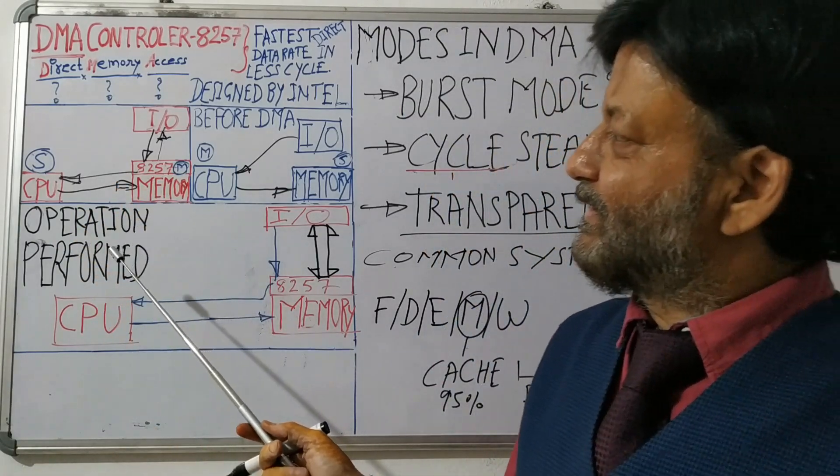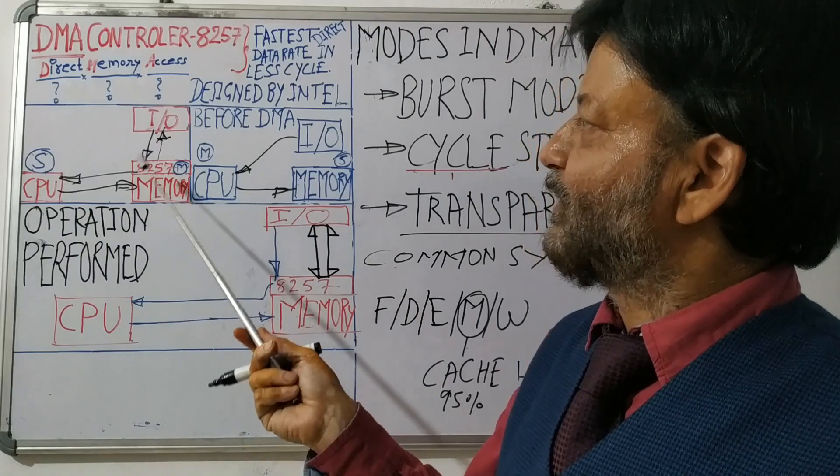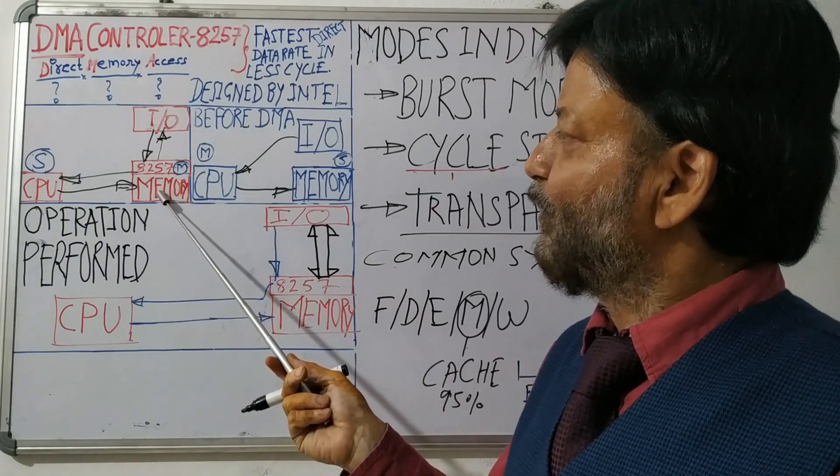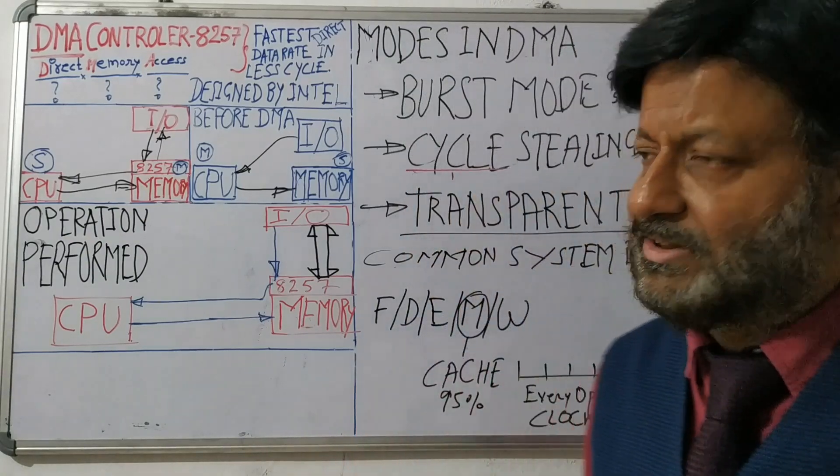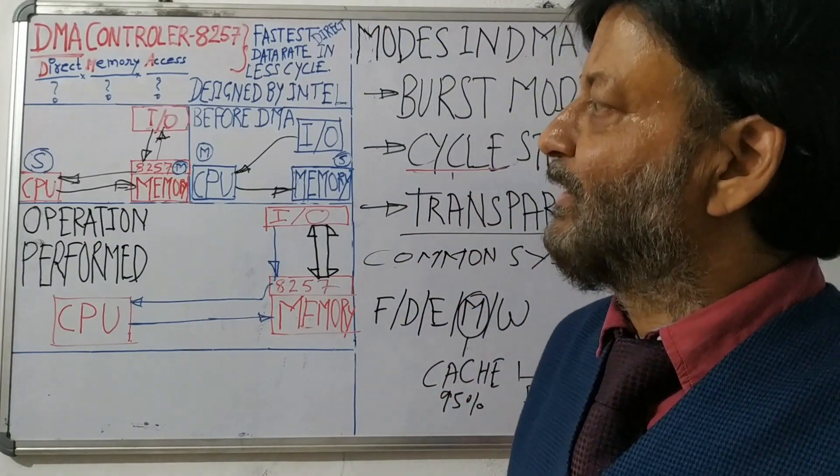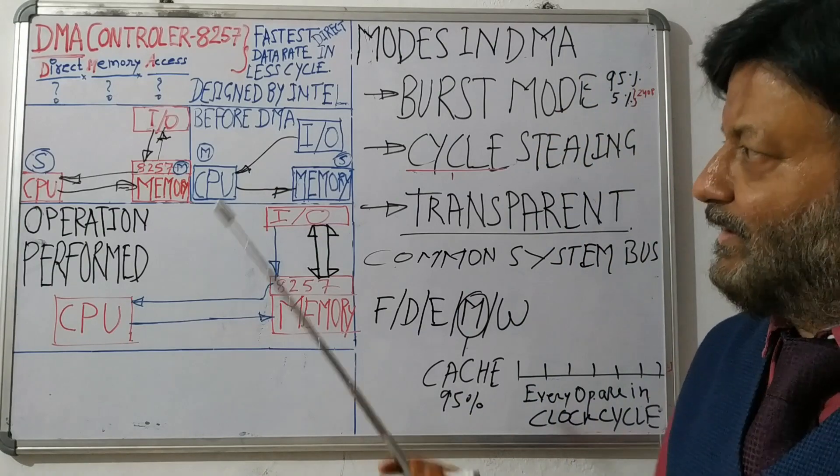So we do not have separate system bus to transfer the data from IO to memory or memory to IO. We need system bus. System bus consists with three separate buses that are data bus, control bus, and address bus.